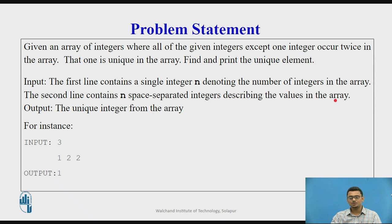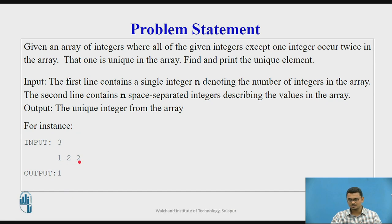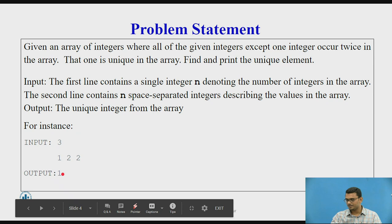You can store it in an integer or process the input one by one. The output will be the unique integer from the array. For example, I have passed 3 as the value of n and the elements that are separated by space are 1, 2, and 2. Here 1 is the unique element and 2 is repeated twice, so 1 will be returned as the output.